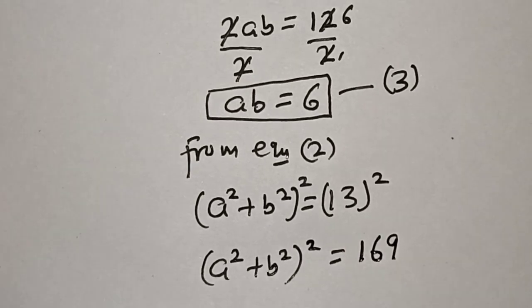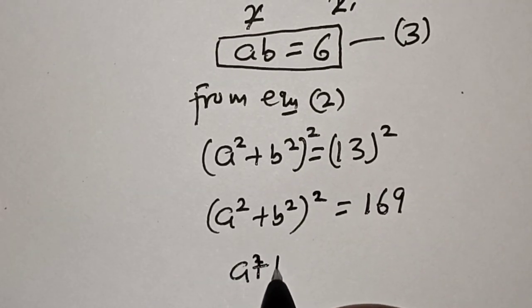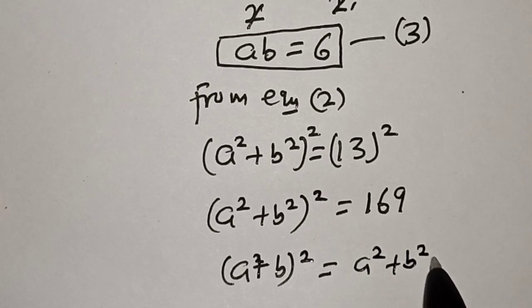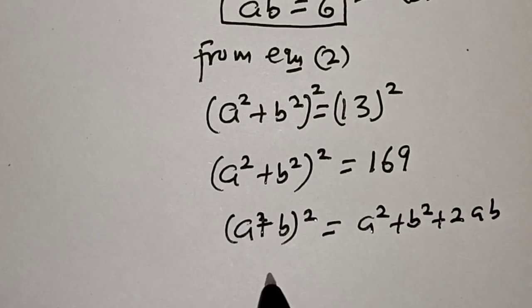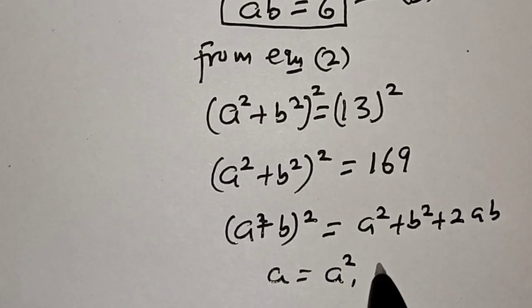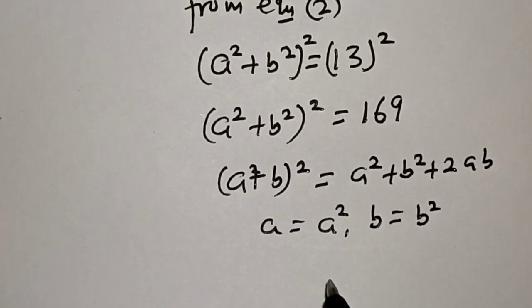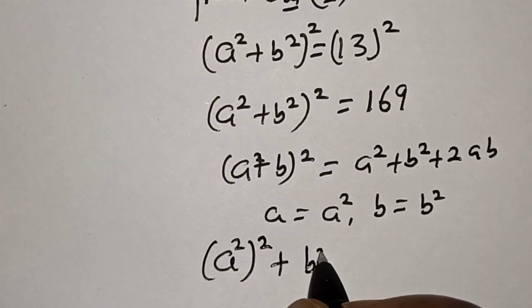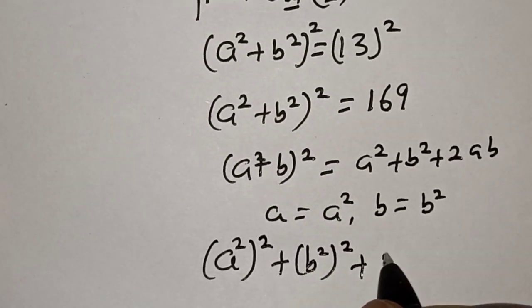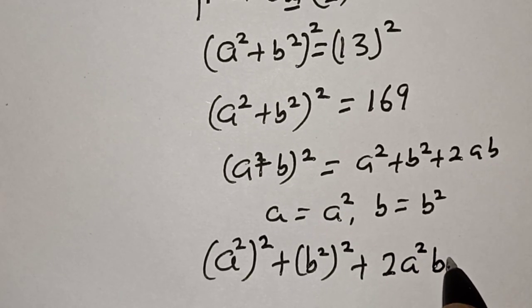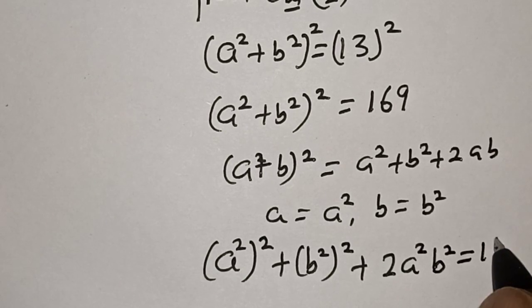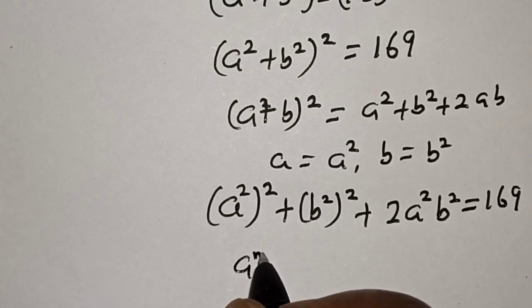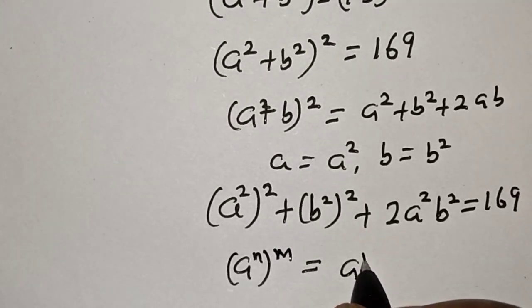Using the expansion rule, a squared plus b squared, all squared, equals a to the power 4 plus b to the power 4 plus 2·a²·b². Also recall the exponent rule: a raised to power n, then raised to power m, equals a raised to power n times m.